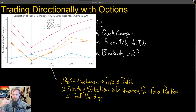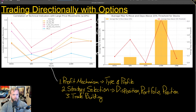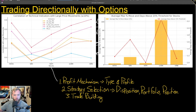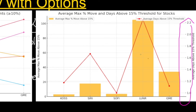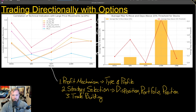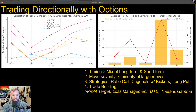I also want to qualify and quantify those movements. If I see any of these stocks move greater than 15%, once it moves 15%, how much higher does it typically go? We can see that in these bars for Costco, Siri, SoFi, Lunar, and GME. I can also ask how long it stays above that threshold — that's what the red line shows. It's really short duration for most of them after those moves. All of this information directly feeds into how I think about building positions.